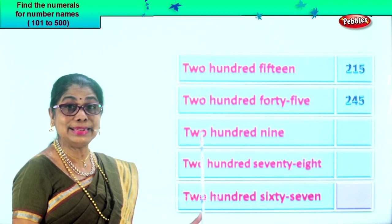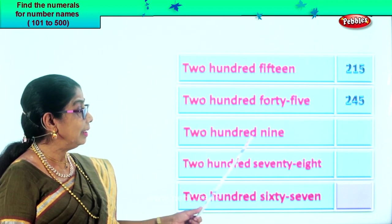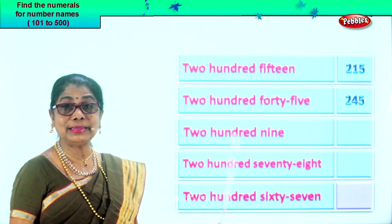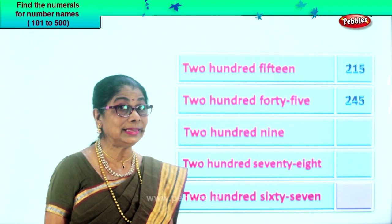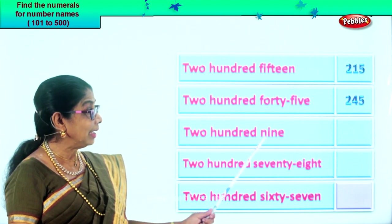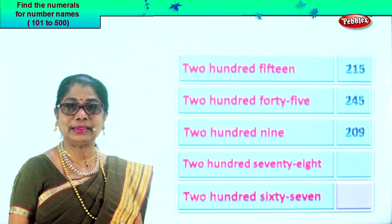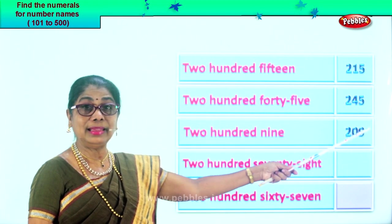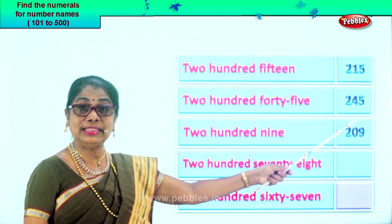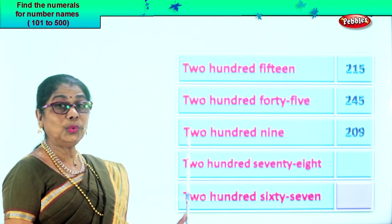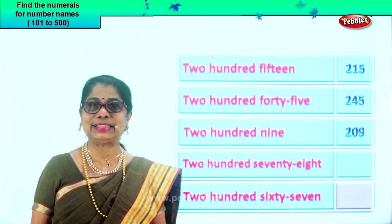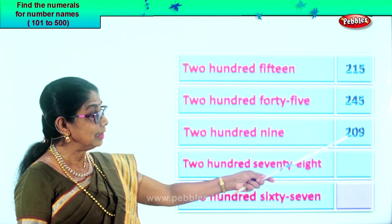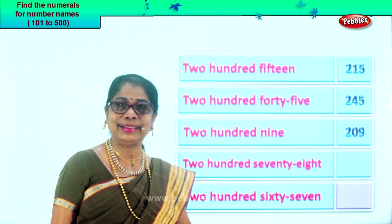Let's take the next number name. Two hundred nine. Here you have two in the hundredth place. Zero in the tens place, and nine in the ones place. Two hundred nine — nine in the ones place, zero in the tens place, two in the hundredth place. Read this: two hundred nine.